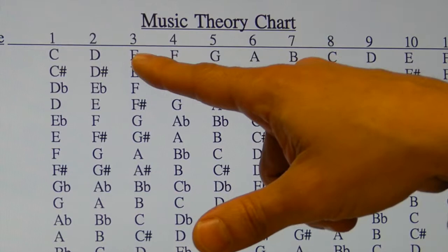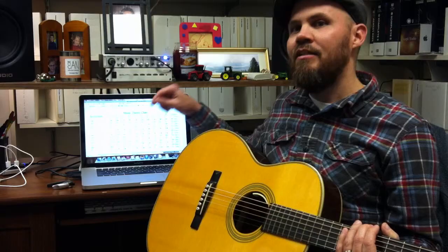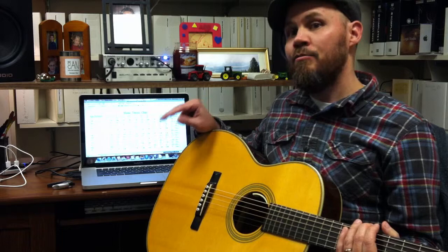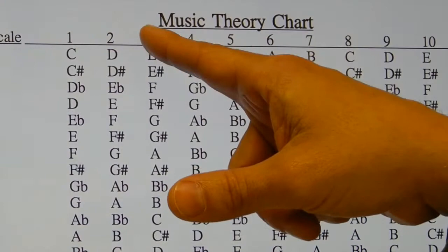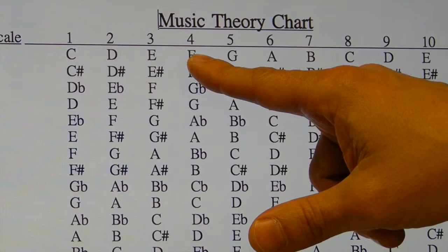So any major scale will go: whole step, whole step, half step, whole step, whole step, whole step, half step — two whole steps then a half step, three whole steps then a half step. And these each have their own number in the musical scale. For example, D is the second note in the C scale, or F is the fourth note. This will be important when we talk about chords a little bit later on and how chords are made.